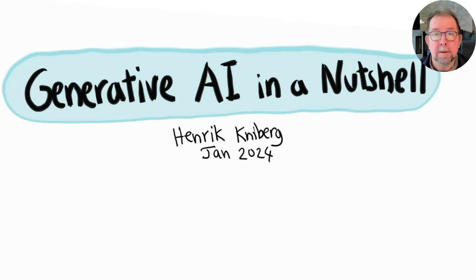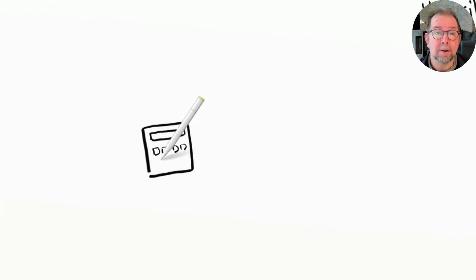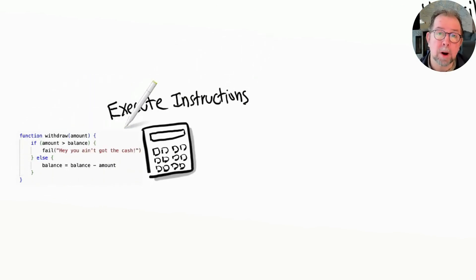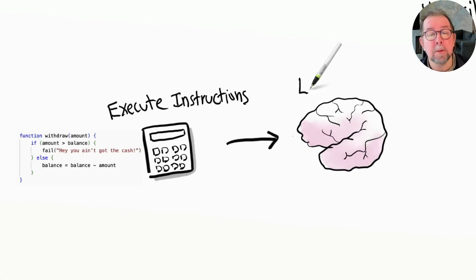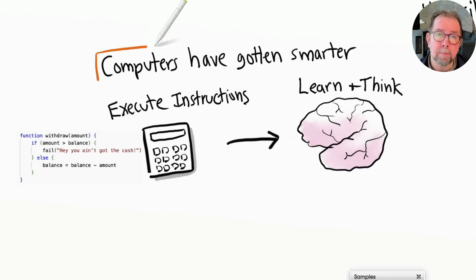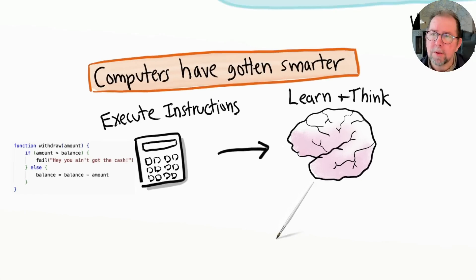Ever since computers were invented, they've really just been glorified calculators - machines that execute the exact instructions given to them by programmers. But something incredible is happening now: computers have started gaining the ability to learn and think and communicate just like we do. They can do creative intellectual work that previously only humans could do.